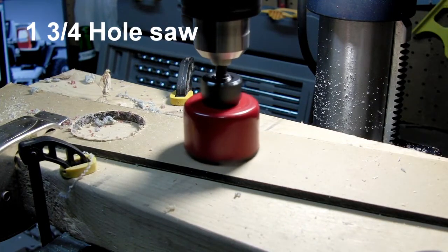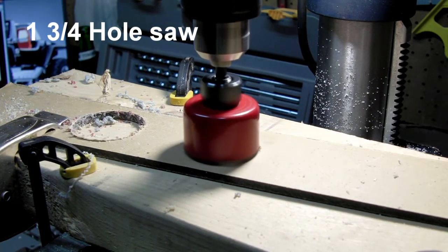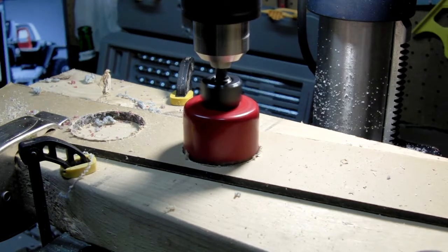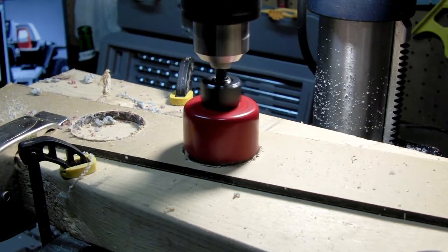Using an inch and three quarter hole saw and lining up the divot in the wood with the pilot bit of the hole saw, we're going to cut this thin piece of plastic out so that we get a spacer.